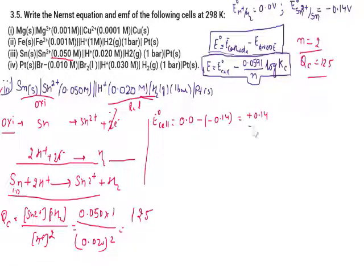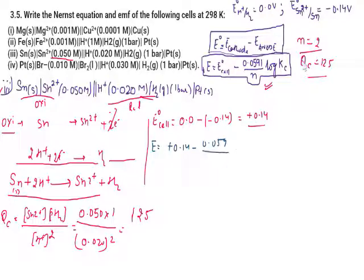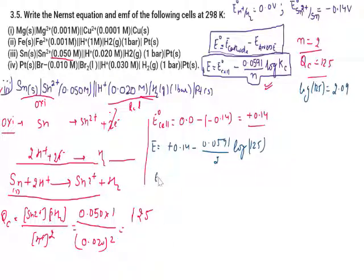Applying the Nernst equation: E = 0.14 − (0.0591/2) × log(125). From logarithm tables, log(125) = 2.09. So E = 0.14 − 0.02955 × 2.09 = 0.14 − 0.0617 = 0.078 V. This is the answer for part 3.